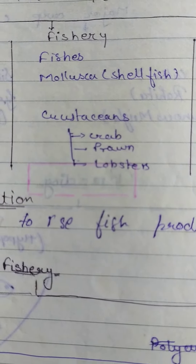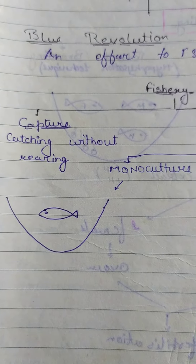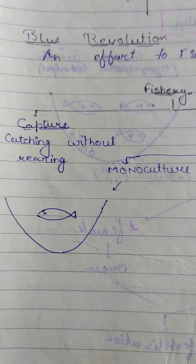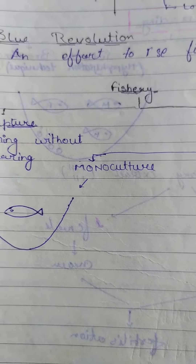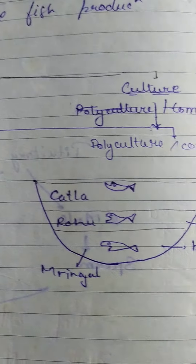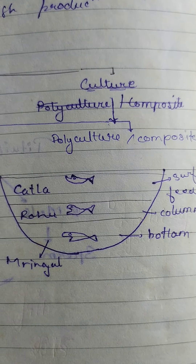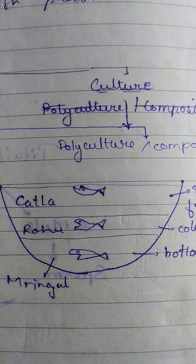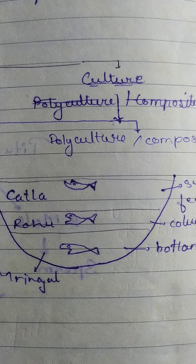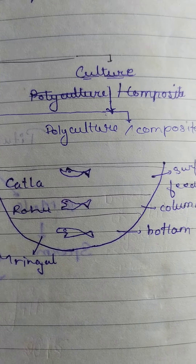Fishery includes capture fishery, which is catching without rearing. Then there is monoculture and polyculture, also called composite culture.